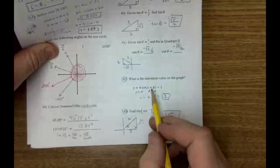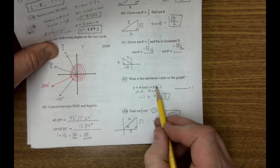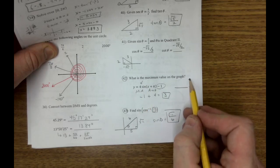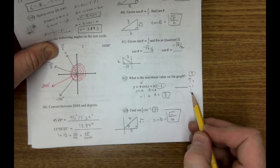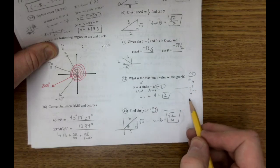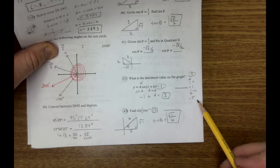42, what's the maximum value on the graph? Well, here's my middle. My middle is negative 1. My amplitude is 4. So I'm going to go up 4 and get up to 3. And if I wanted a minimum, I could subtract 4, and I get down to negative 5. But there's my max, mid, min.